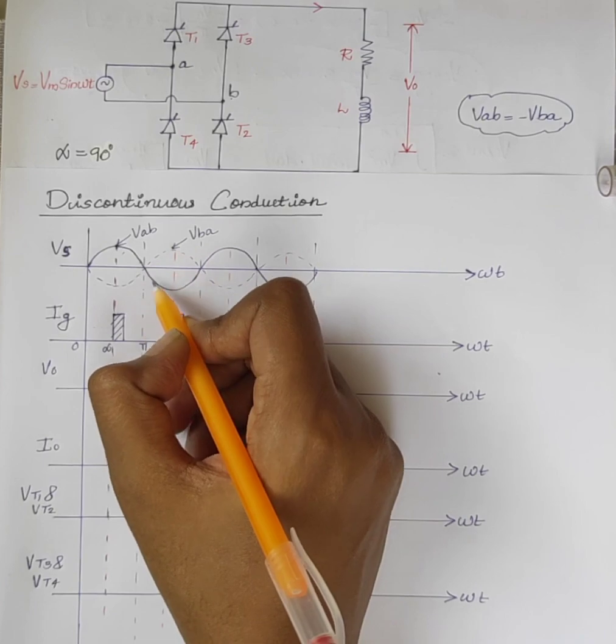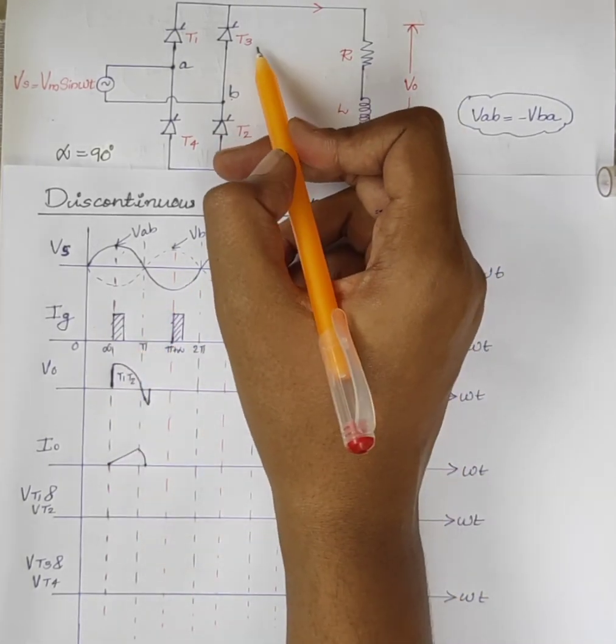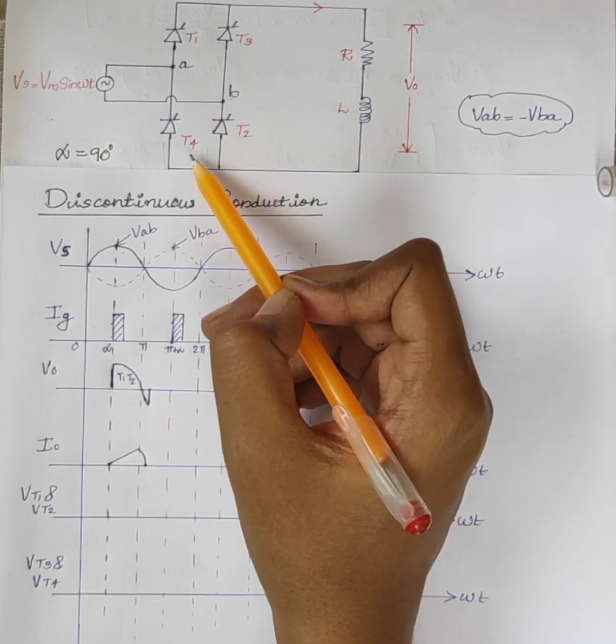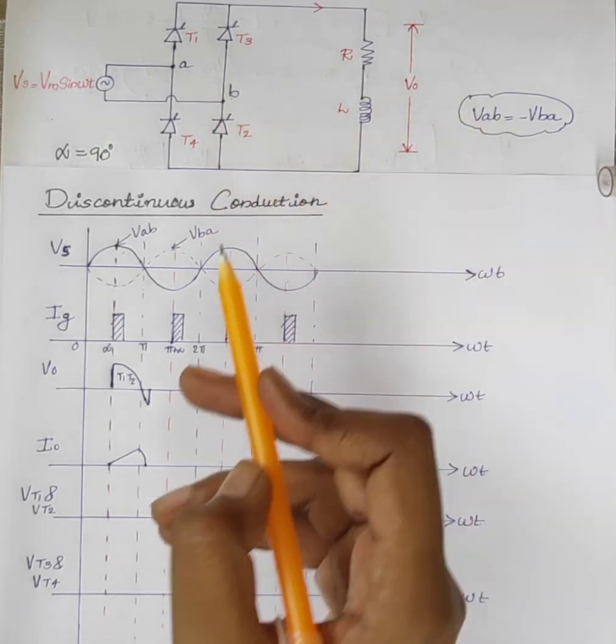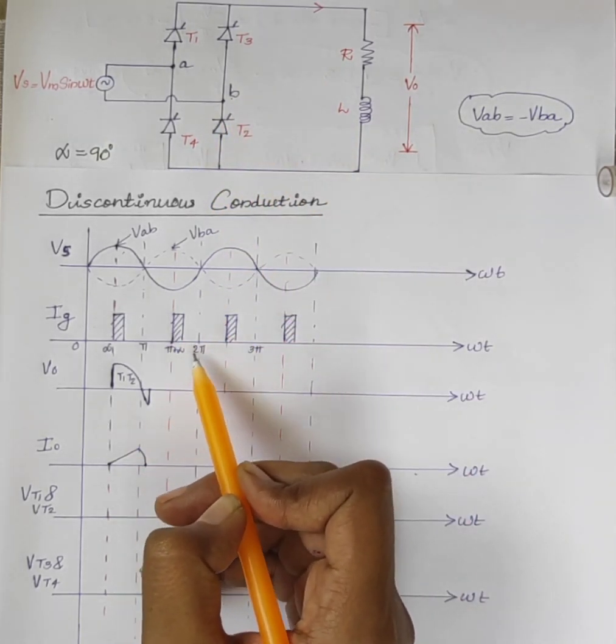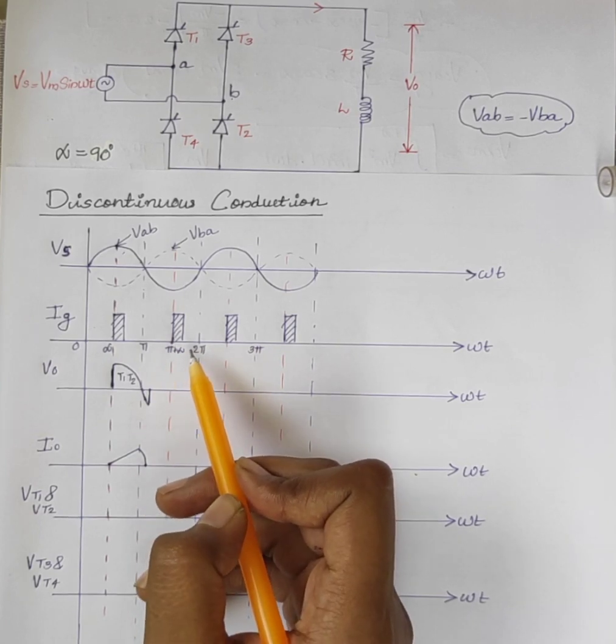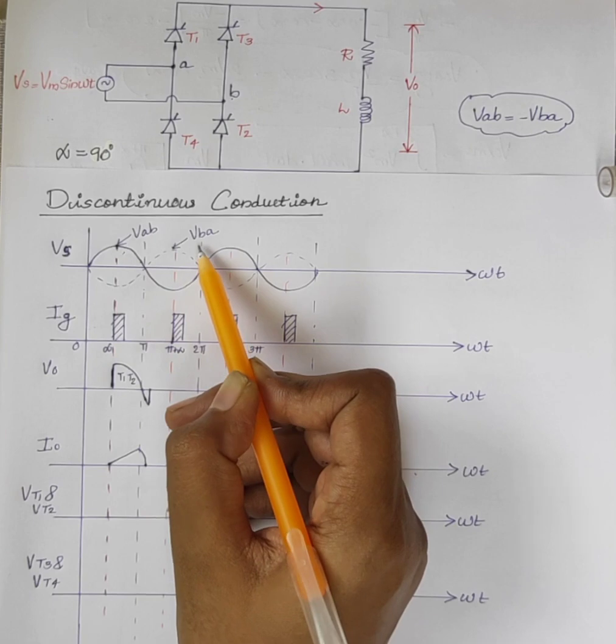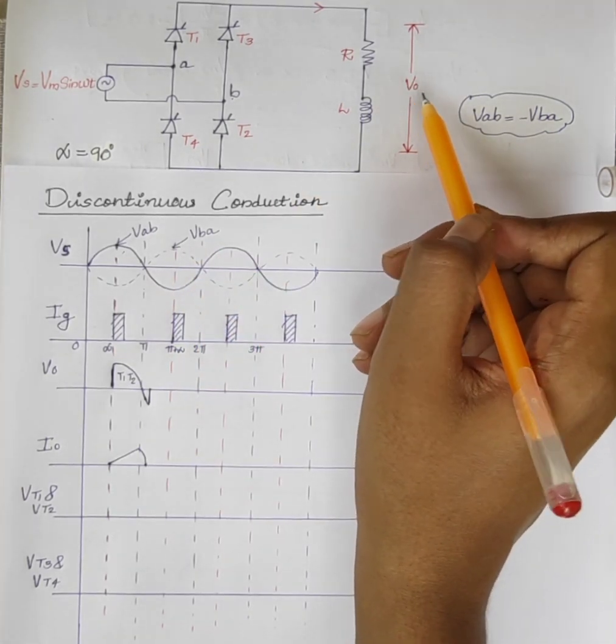During the negative half cycle, T1 and T2 are reverse biased and T3 and T4 are forward biased. At omega t equals pi plus alpha, firing pulses are given to T3 and T4, so this voltage VBA appears across the load.